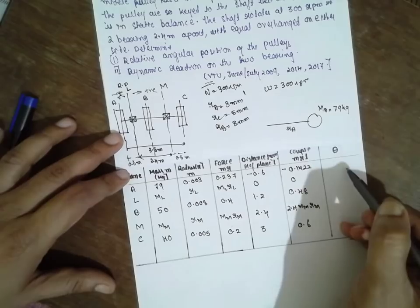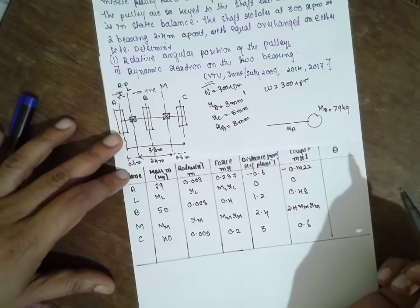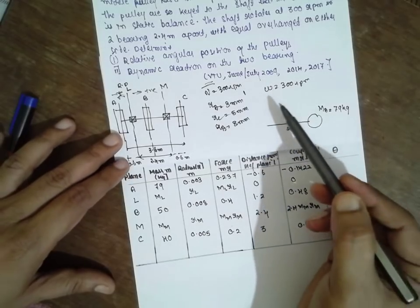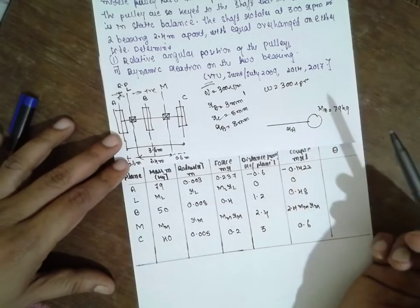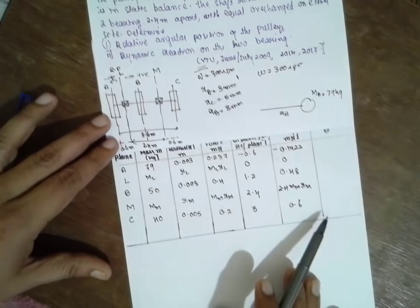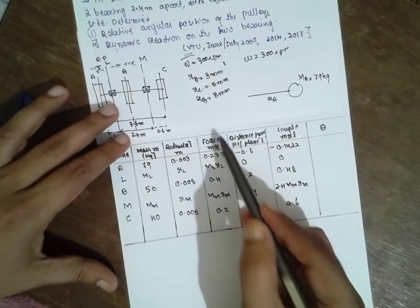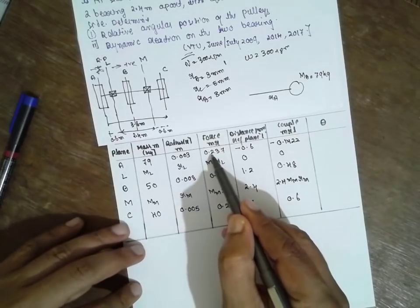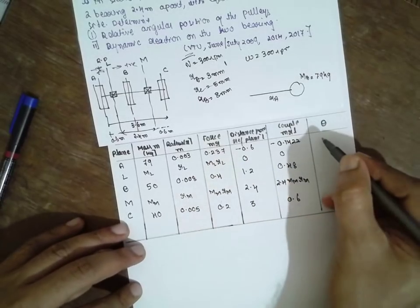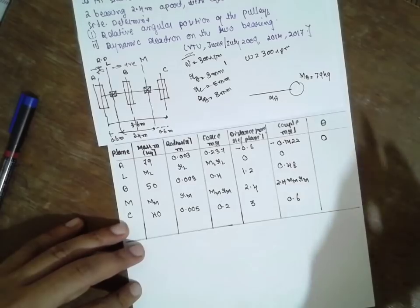Now these theta are completely unknown here. They are not provided any angles here. We have to find out the angles. Now how to do that? I will go for a force. From the force, three values I know: this one, this, and this. Therefore, the first value I will consider at zero angle.